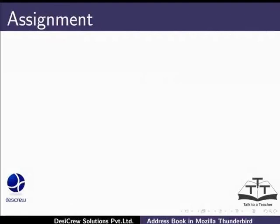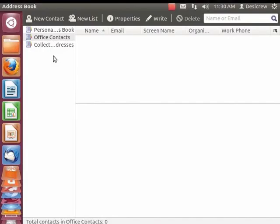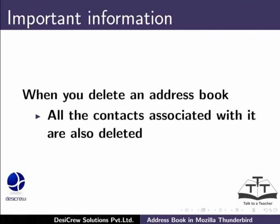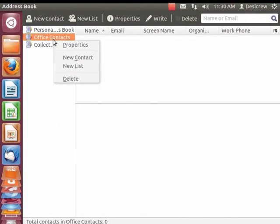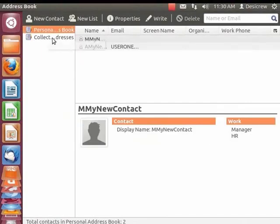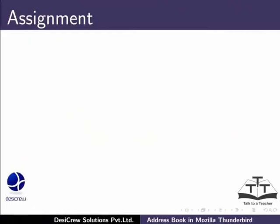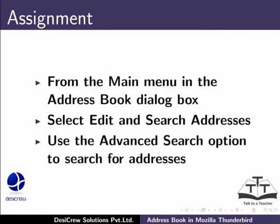Pause this tutorial and do this assignment: create a new address book and add contacts to it. Next, let's learn to delete an address book. Remember, when you delete an address book, all the contacts associated with it are also deleted. To delete the address book 'Office Contacts', select it from the left panel. Right-click to view the context menu and select Delete. A dialog box requesting you to confirm the delete action appears. Click OK. The address book is deleted. Pause and do this assignment: create a new address book called 'Additional Office Contacts', use the Edit option in the address book toolbar, then delete this address book. You can also use Edit and Search Addresses from the main menu, and use the advanced search option to search for addresses.